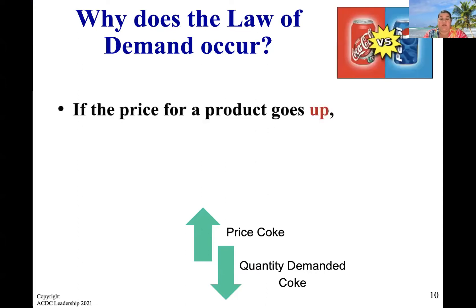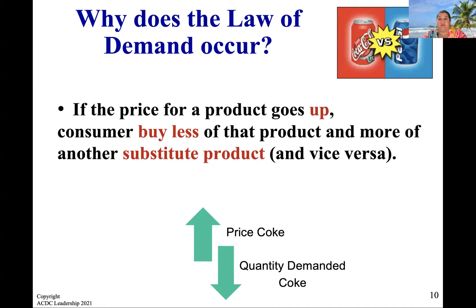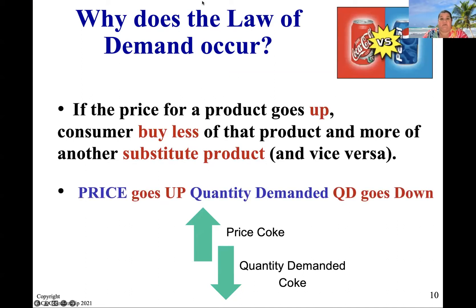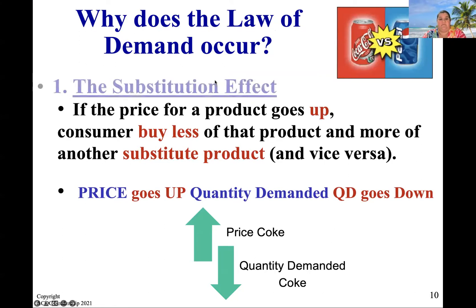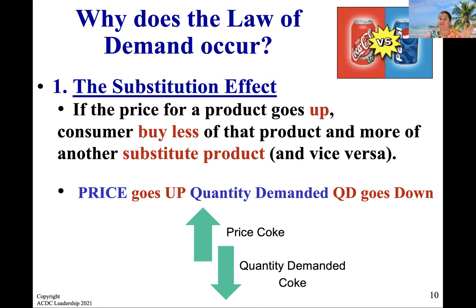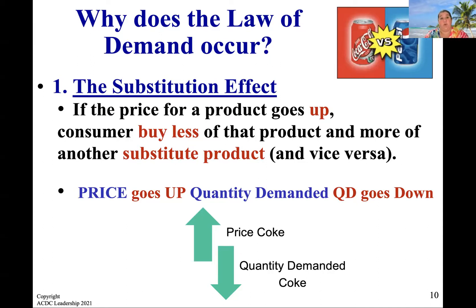Let's talk about the substitution effect. If the price for one product goes up, the consumer is going to buy less of that and more of another complementary product. So if the price for Coke goes up, the quantity demanded for Coke goes down. People will start buying Pepsi instead. If Coke becomes $20 a 12-pack, maybe you don't care that much about the difference in taste between Coke and Pepsi, and so you're going to buy a substitute good. As the price for one goes up, the quantity demanded goes down, and demand for the substitute product will probably increase.